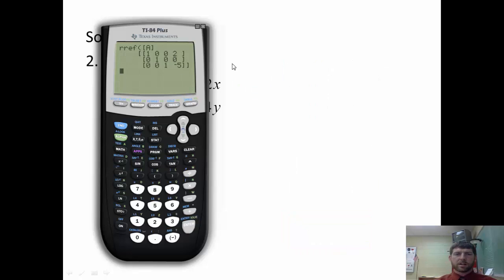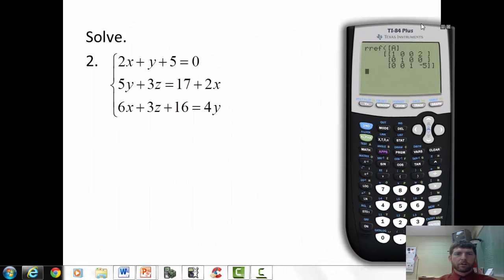That tells us that 2, 0, negative 5 is our solution. So we just solved all three of those equations at one time just by hitting this calculator function. Let's look at another example. So let's say we have this system. 2x plus y equals 5 equals 0. 5y plus 3z equals 17 plus 2x. And 6x plus 3z equals 16 plus 4y.